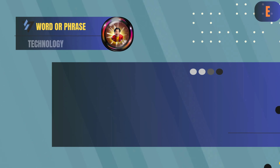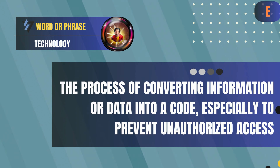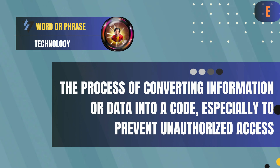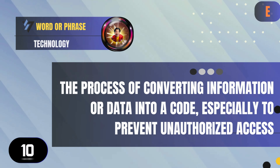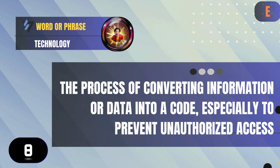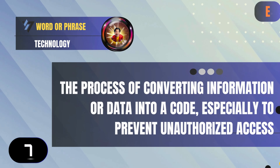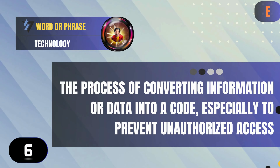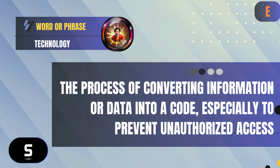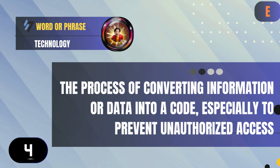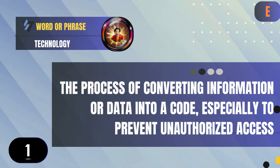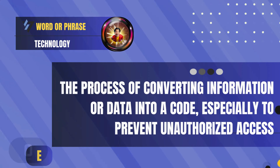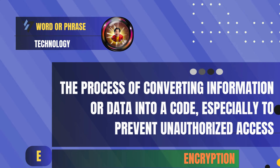E: The process of converting information or data into a code, especially to prevent unauthorized access. Answer: Encryption.